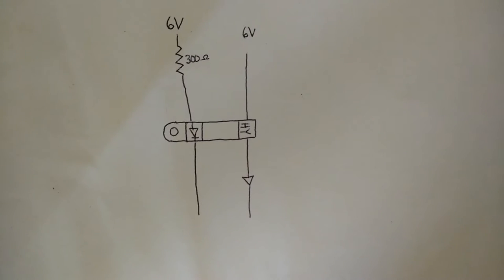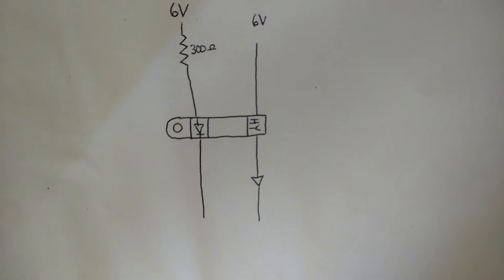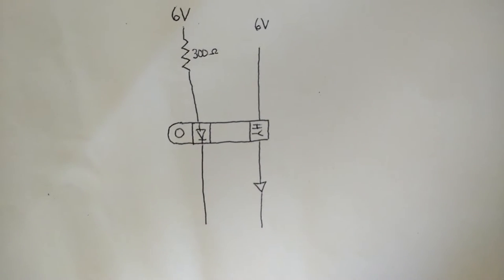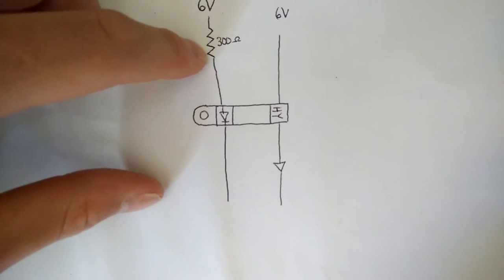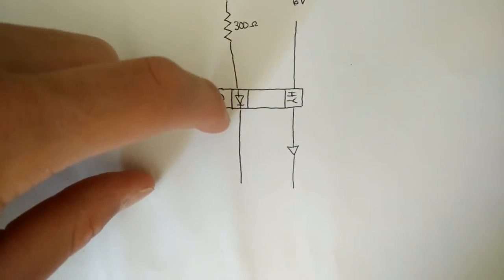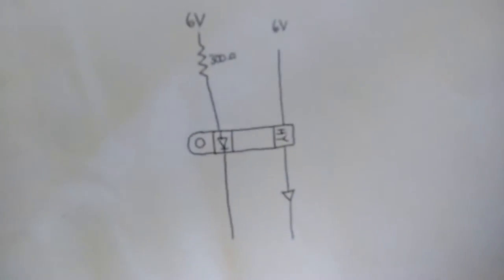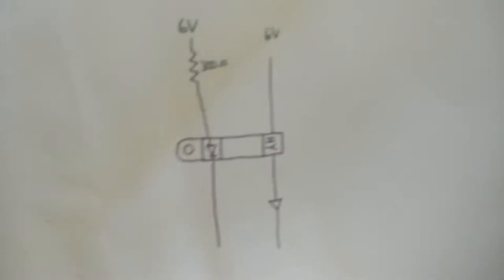Okay, so the way I set mine up is I have a total of six volts. I have four AA batteries and I put a 300 ohm resistor, and then after that I put it through the switch to the left side, and then it just goes to ground. So it's a complete circuit.